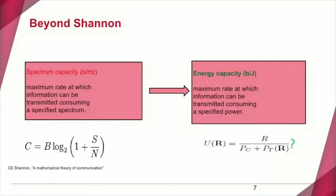In the past, our focus has always been attracted by Shannon's capacity formula. This formula basically tells us the maximum rate at which information can be transmitted consuming a specific spectrum. This capacity formula is amazing because it tells us that for a certain channel, there's a clear upper bound. If you have not achieved that upper bound, you need to work on it — that's the direction and target. But it also tells us that once you reach that goal, there's nothing else beyond that — you need to seek something else. That's the contribution of this capacity bound.